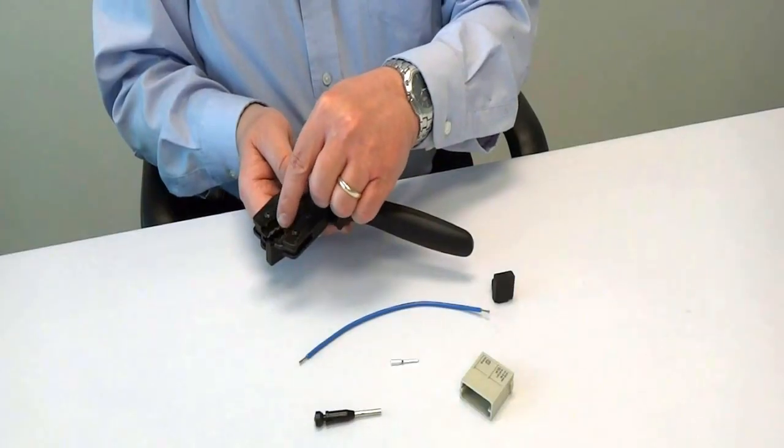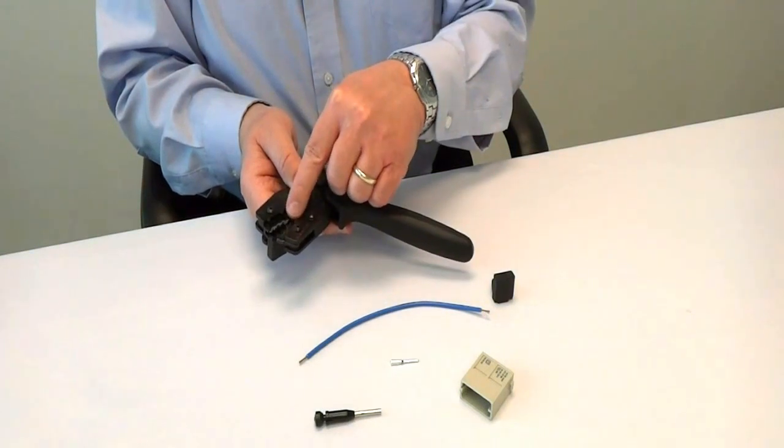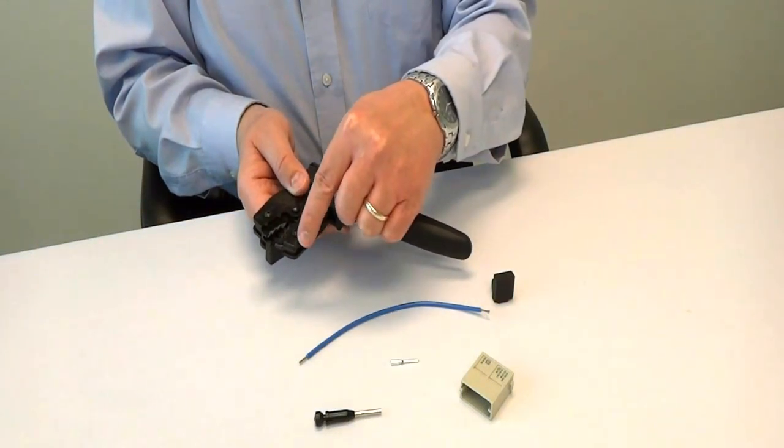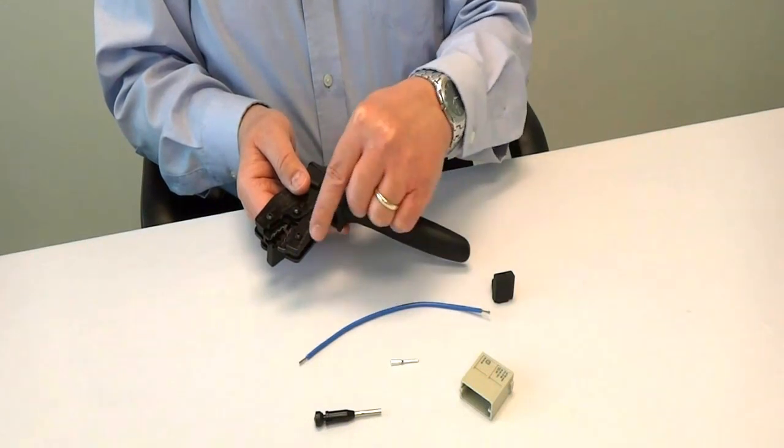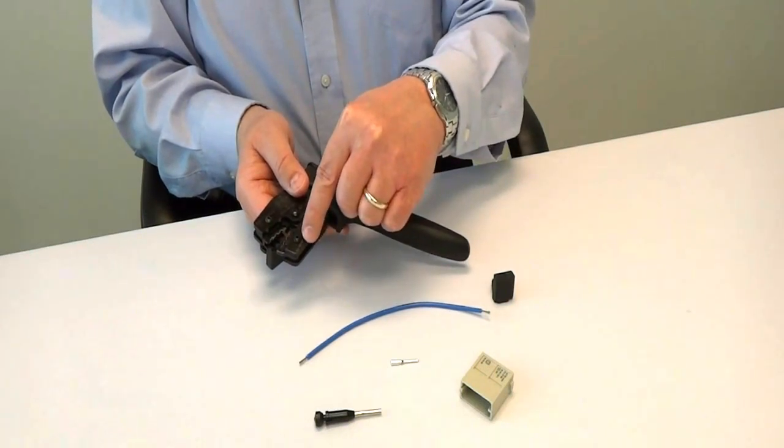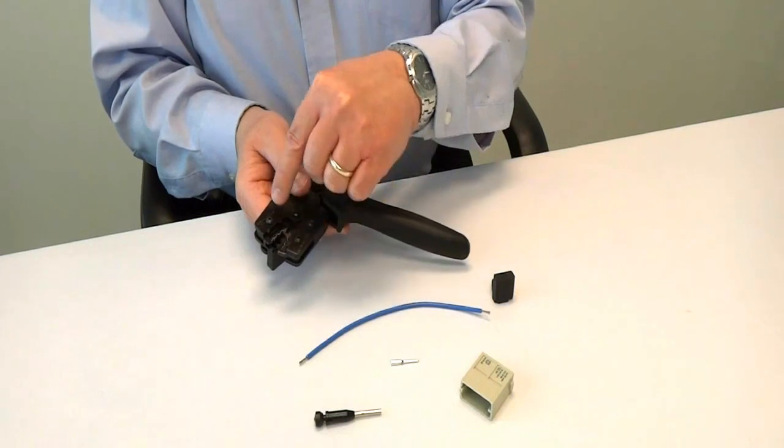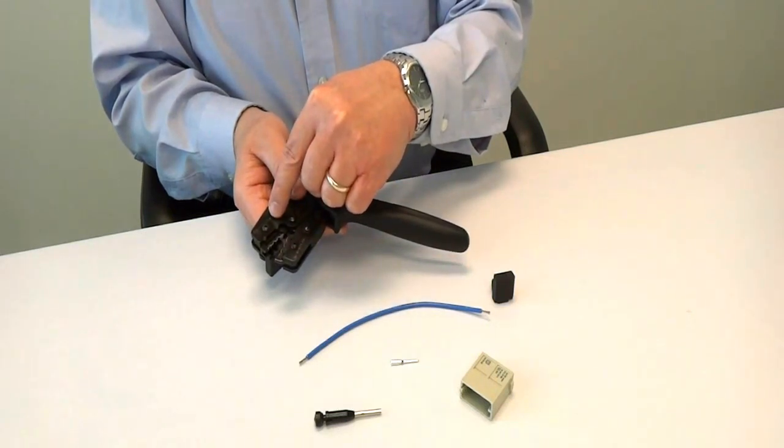There are positions for crimping in the jaws of the crimp tool, and also there's wire gauges noted on the side of the crimp tool. For 16 gauge wire, we're going to pick the center position which is marked with a 16. Metric wire sizes are also referenced on the tool.